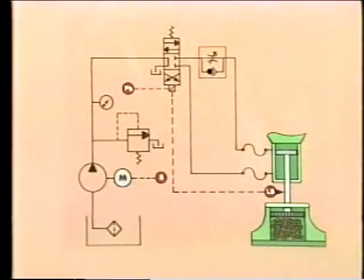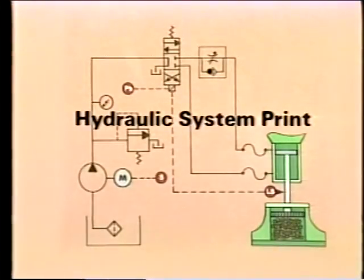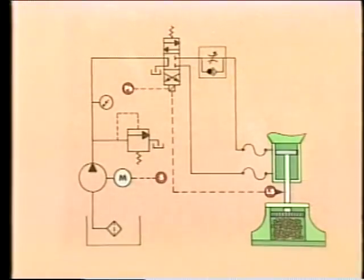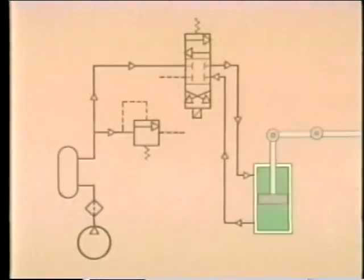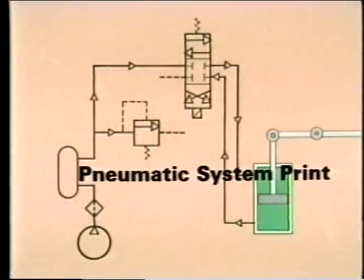A fluid power system is a system that uses a fluid to accomplish work. This fluid can be either air or a liquid. If the fluid is air, the system is called a pneumatic system; if the fluid is a liquid, the system is called a hydraulic system. Although hydraulic and pneumatic systems use different components, they're both shown on prints in similar ways. Before examining any prints in detail, let's discuss the major differences between these two types of systems.